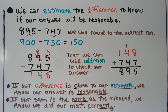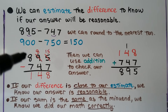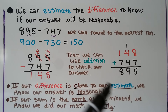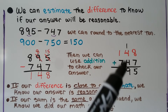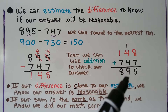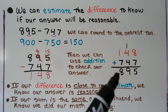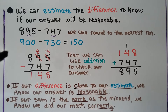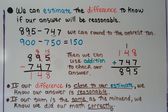Then we can use addition to check our answer. We can add 148 plus 747 to see if our sum is 895. 8 plus 7 is 15 — we regroup the 1, put the 5 in the ones place. 4 plus 4 is 8, plus 1 more is 9. And for our hundreds, 1 plus 7 is 8. We have the same as our minuend as our sum. If our difference is close to our estimate — like 148 was close to 150 — we know our answer is reasonable. And if our sum is the same as the minuend, we know we did our math correctly.